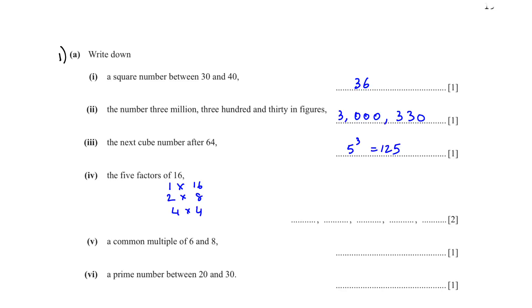So the factors of 16 are 1, 2, 4, 8, and 16. A common multiple of 6 and 8 - whenever they ask you a common multiple you can just multiply the numbers by itself, 6 times 8 is 48. A prime number between 20 and 30.